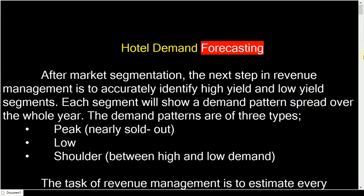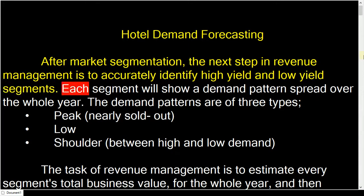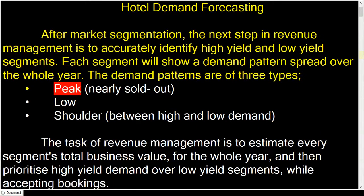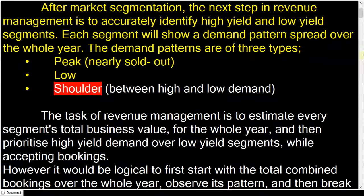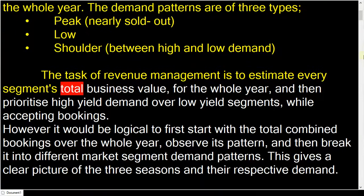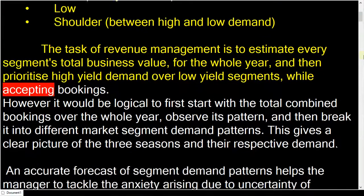Hotel Demand Forecasting. After market segmentation, the next step in revenue management is to accurately identify high-yield and low-yield segments. Each segment will show a demand pattern spread over the whole year. The demand patterns are of three types: Peak, Low, and Shoulder. The task of revenue management is to estimate every segment's total business value for the whole year, and then prioritize high-yield demand over low-yield segments while accepting bookings.